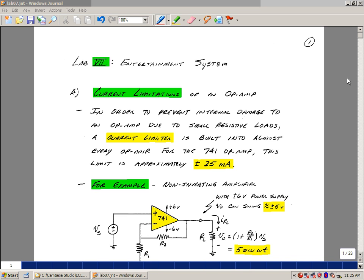Lab number seven is entitled Entertainment System. What we're effectively going to build in this lab is a docking station. If you have an MP3 player driving a set of headphones, we're going to take that MP3 player, or whatever source of music you have, and connect it up to a power amplifier that can drive a speaker. We're also going to build a mixer which will allow us to combine various sources of sound, in particular a microphone.